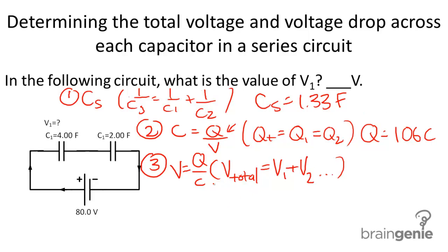Now we have our information. We know CS to be 1.33 and the charge to be 106. Now, we don't really care about the equivalent capacitance now. We care about this capacitor, because we're trying to find the voltage across this specific capacitor.